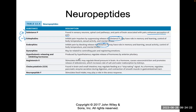Angiotensin 2 stimulates thirst, regulates blood pressure in the brain as a hormone, causes vasoconstriction, and promotes the release of aldosterone, which also increases your heart rate and salt and water reabsorption. So angiotensin 2 is designed to increase your blood pressure. CCK is found in the brain and small intestine and regulates feeding as a stop-eating signal. It's also involved in helping break down fats — when fat hits the stomach and goes into the duodenum, the duodenum releases CCK and tells the gallbladder to release bile and break down the fats.